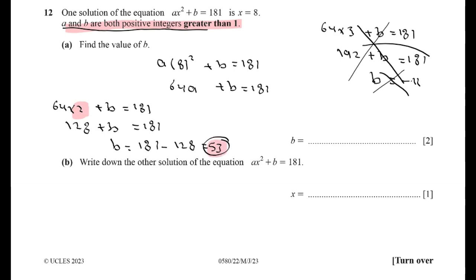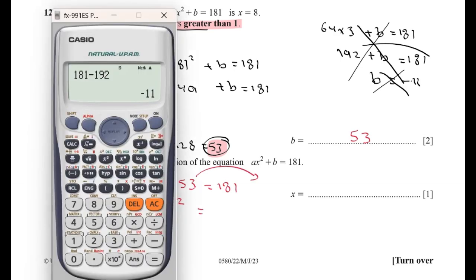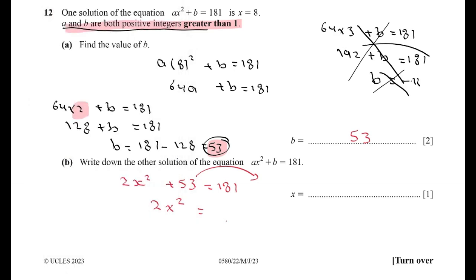Write down the other solution of the equation ax² + b = 181. A equals 2. 2x² + 53 = 181. 53 will go to the other side with different sign. 2x² = 181 minus 53. 181 minus 53 equals 128.